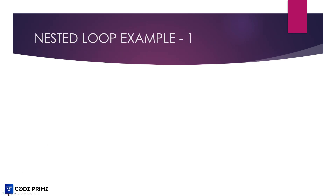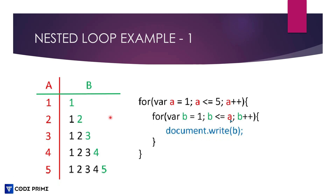This is nested loop example one. We're going to do this practically — it's a common college example where most students get confused about how the nested loop actually works. So let's understand it. Here we can see a chart — a flowchart — that goes: 1, then 1 2, then 1 2 3, then 1 2 3 4, then 1 2 3 4 5.